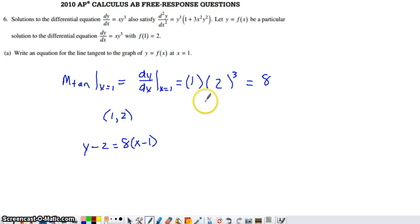You could have gotten your answer in slope-intercept form, too. And I'll just quickly convert this to slope-intercept form in case that's the route you chose to go. Let's see, I'd be distributing my 8, and then I'd be adding my 2 across. And so that would give me, in slope-intercept form, y = 8x minus 6.